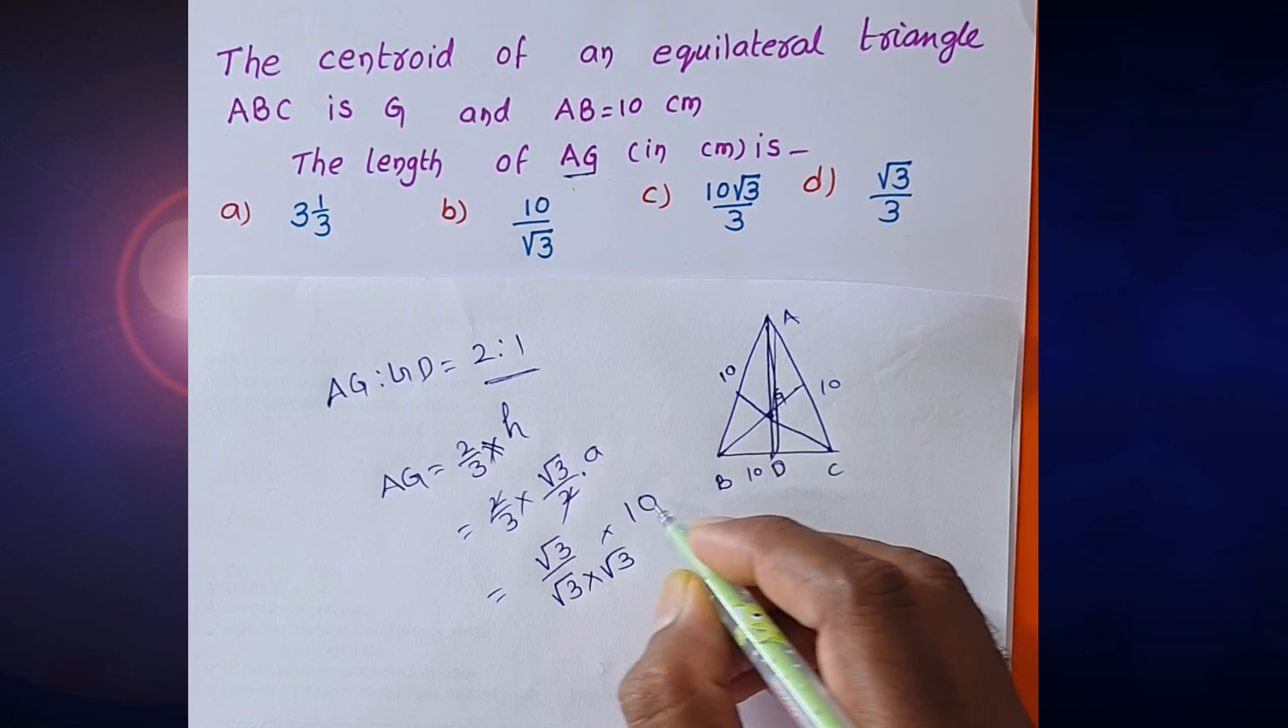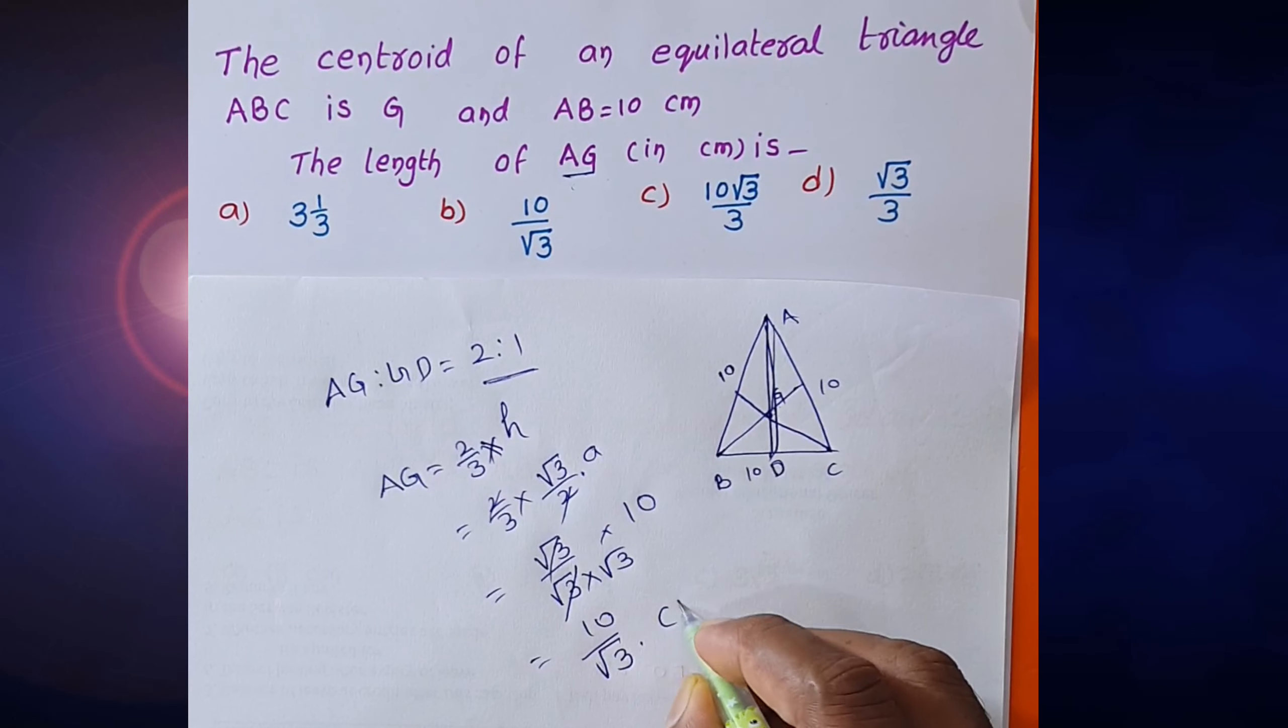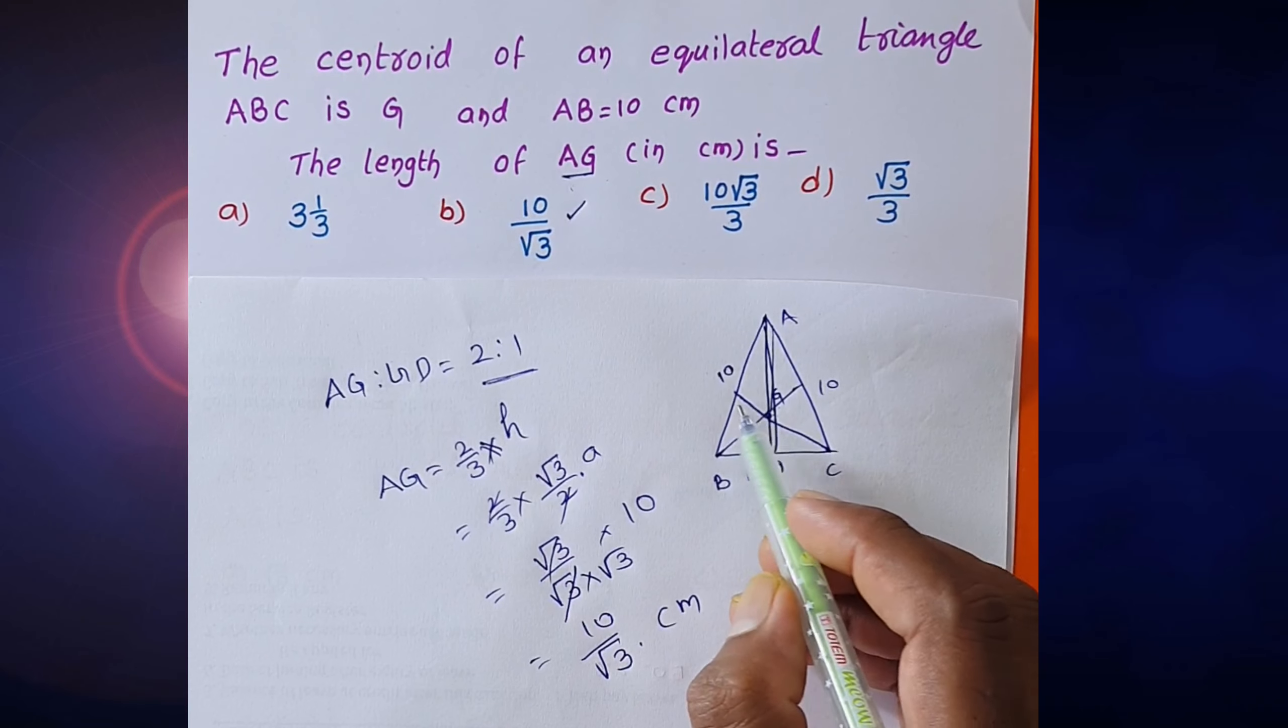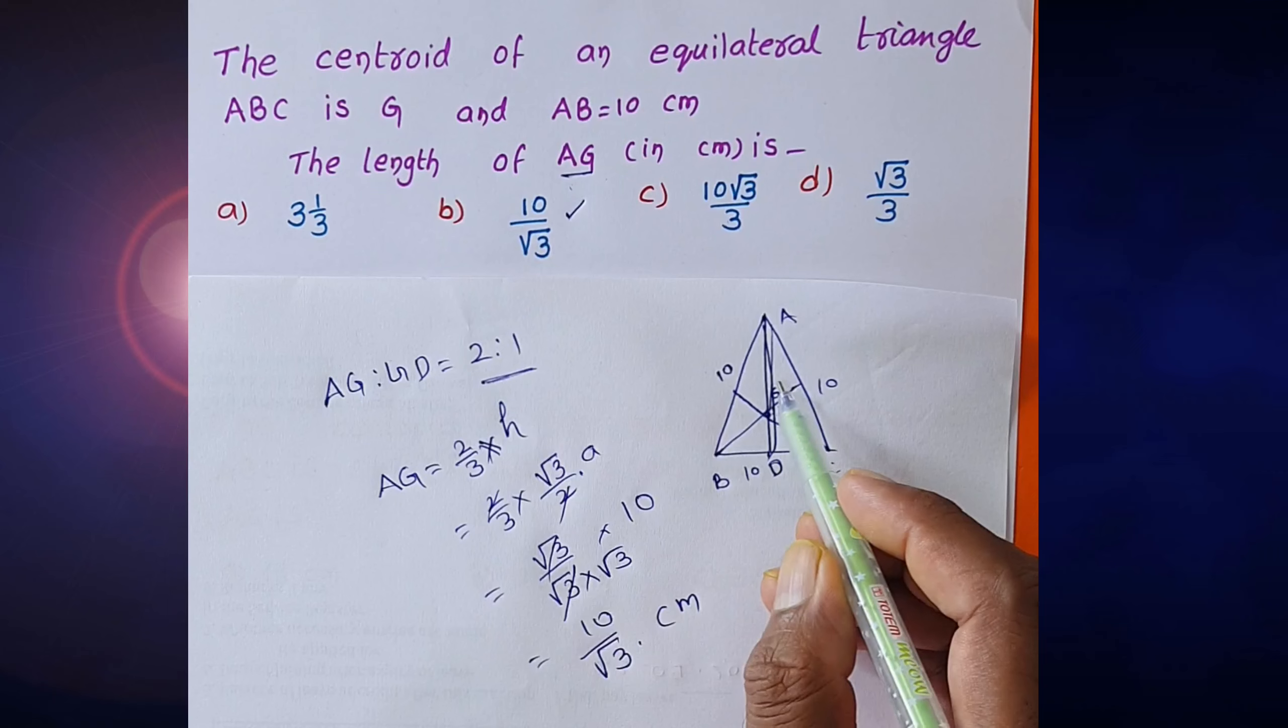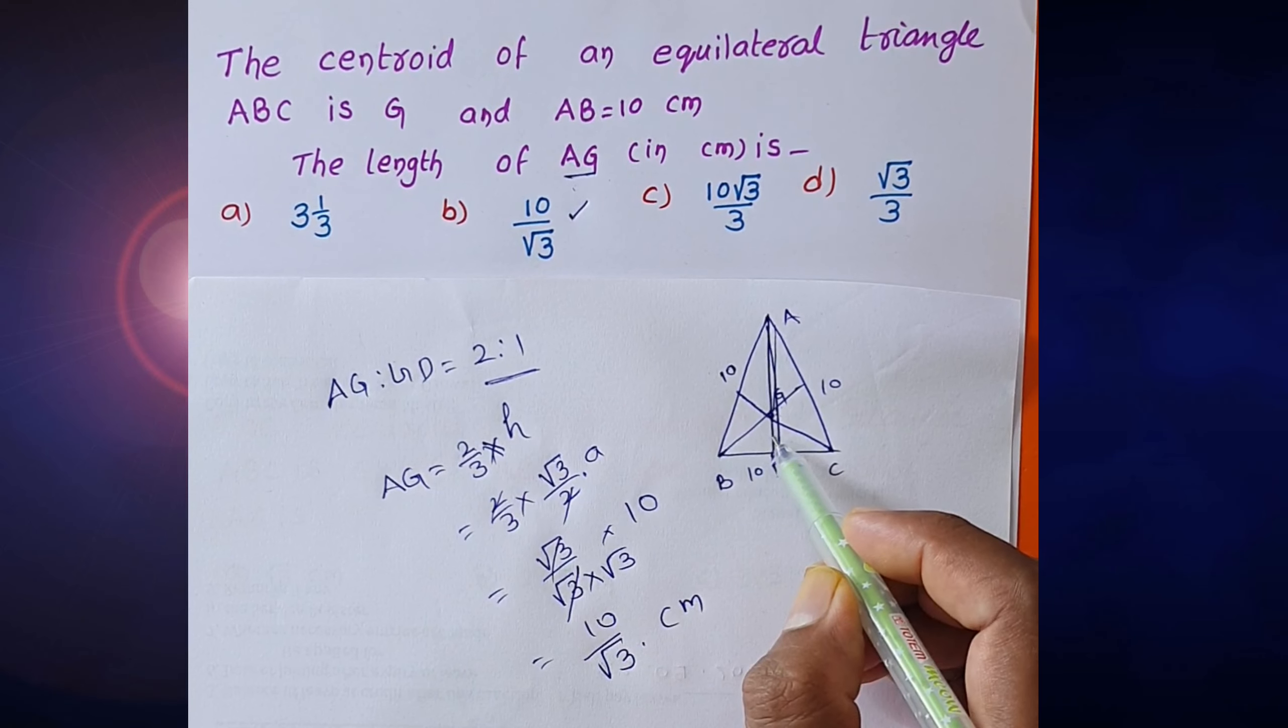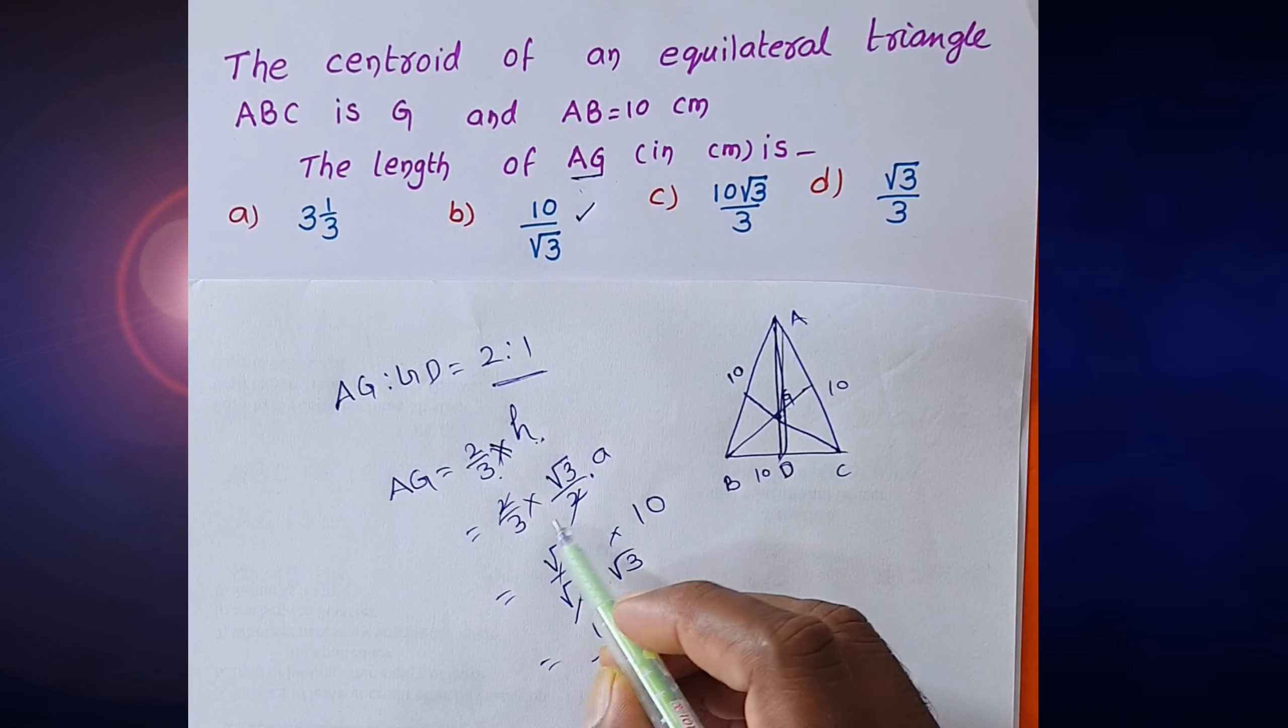AG value is 10 by root 3. Option B is the correct option.